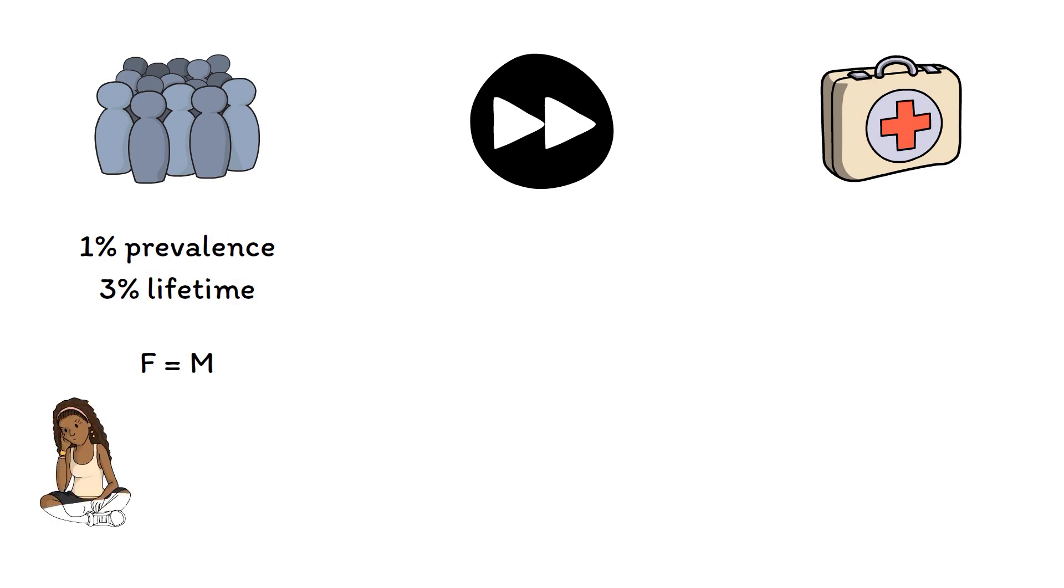Onset of symptoms is often during childhood or young adulthood, with most people developing symptoms before the age of 20 and almost all before the age of 30. Symptoms often come on gradually, but soon become chronic and enduring.